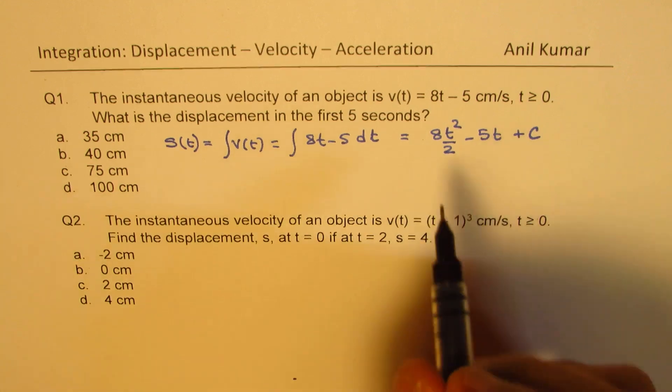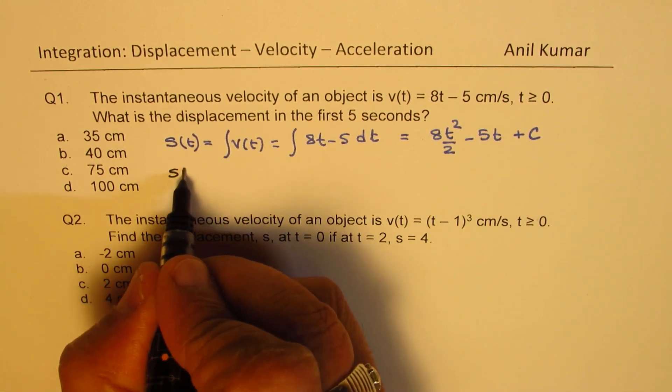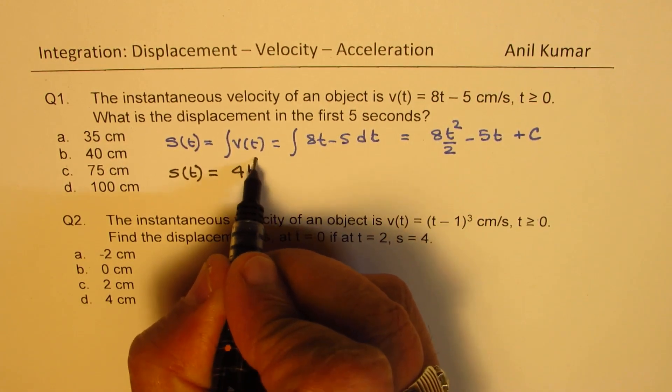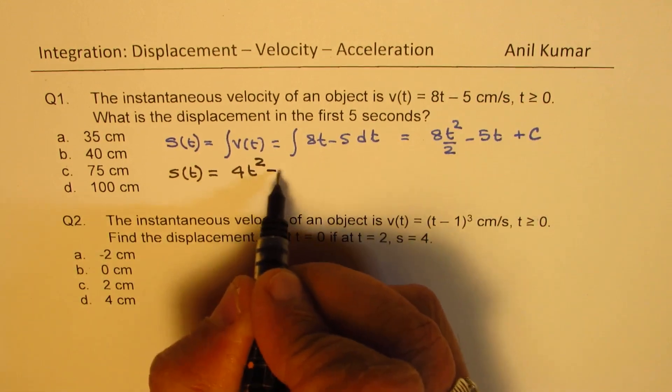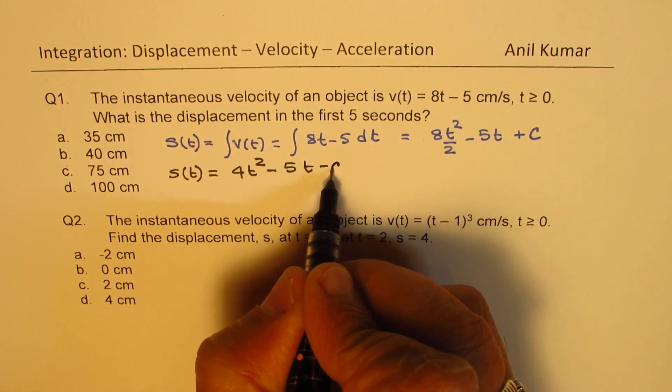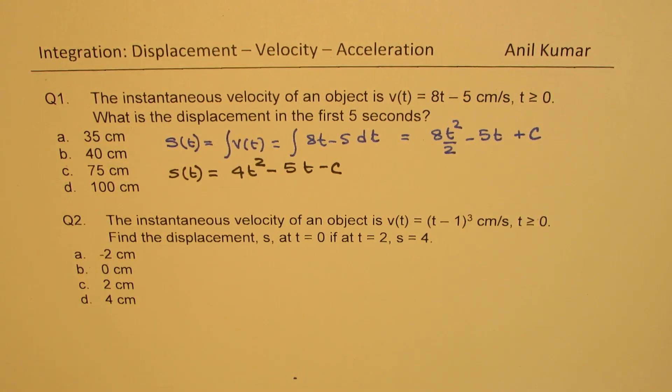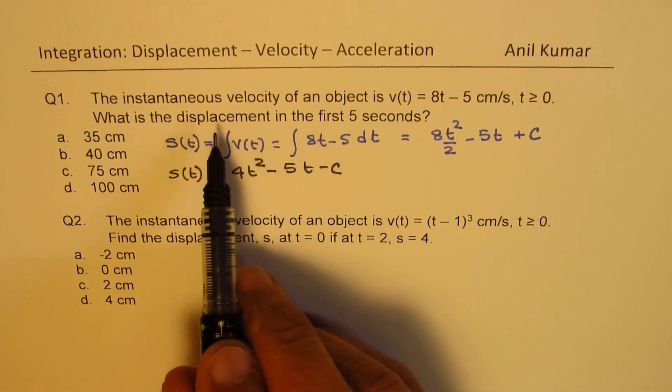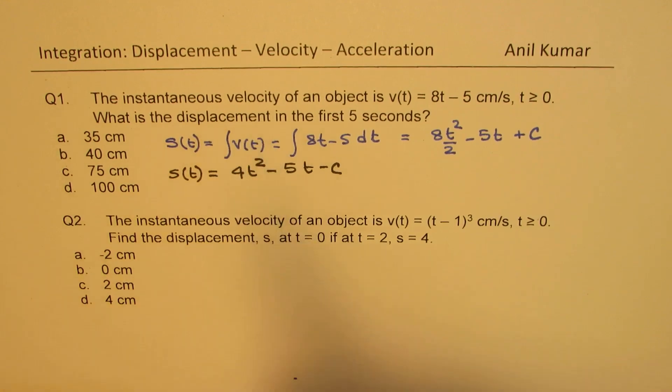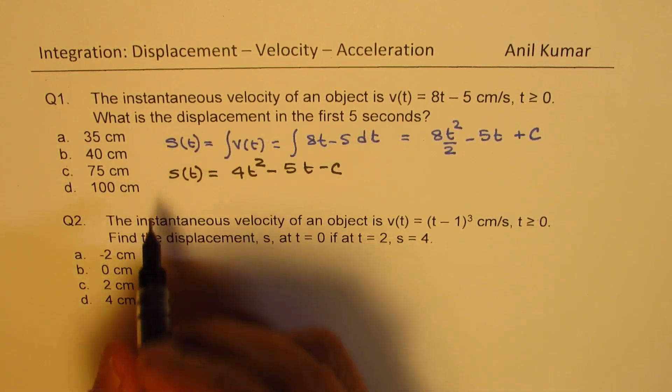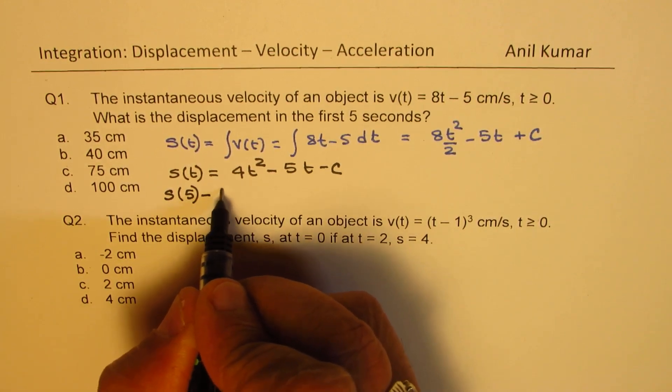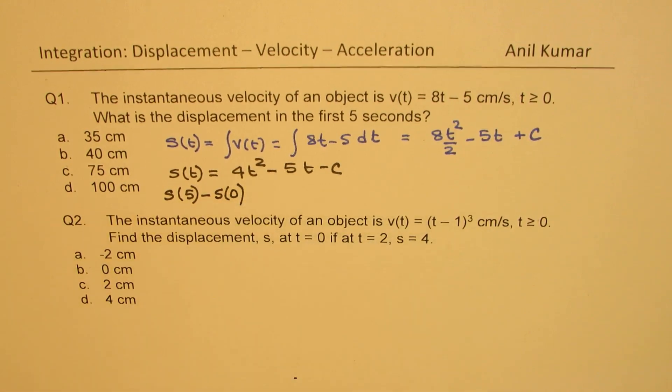So let me write this function s(t) as equal to 4t squared minus 5t plus c. So that is our expression. Now we are talking about displacement, that means from 0 to 5. So what we will do here is that we will find what is s(5) and from that we will take away s(0).